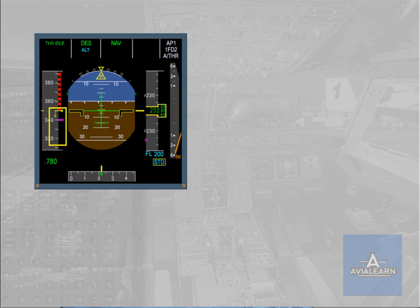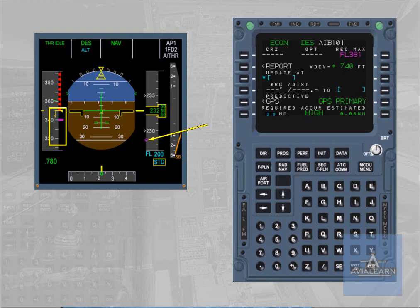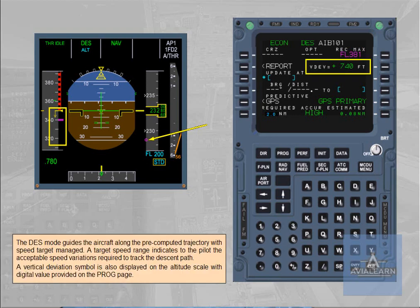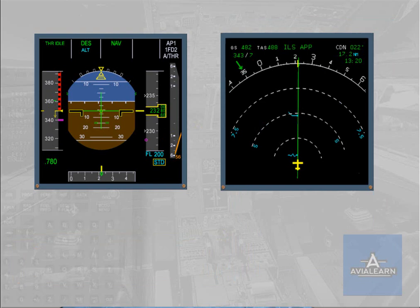A target speed range indicates to the pilot the acceptable speed variations required to track the descent path. A vertical deviation symbol is also displayed on the altitude scale, with a digital value provided on the PROG page. If the aircraft is above the flight path, the descent mode will command a pitch down to recover the FMS descent path. A symbol indicates where the descent path will be recovered.